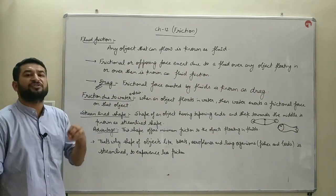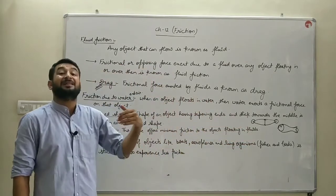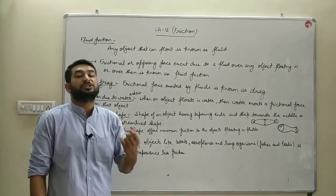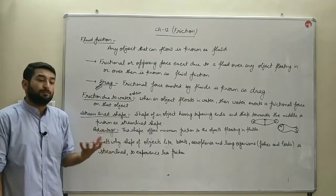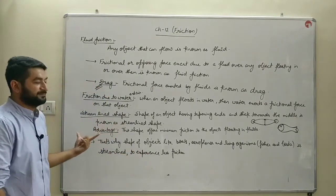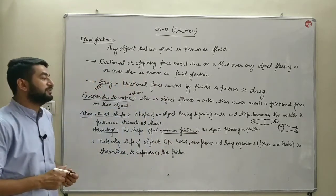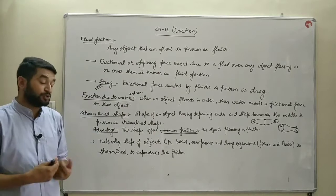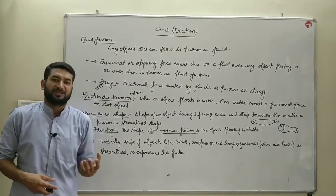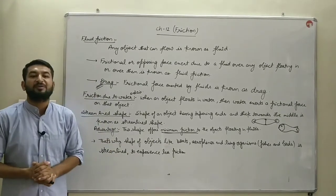Streamlined shape helps in reducing the frictional force exerted by liquid over fishes, by air over birds, by air over aeroplanes, and by water over boats and ships. To reduce that frictional force, the shape is maintained as streamlined. This shape offers minimum friction to objects moving in fluids. Living organisms like birds and fishes are naturally of streamlined shape, and non-living objects like ships, motorboats, and aeroplanes are also made in the form of a streamlined body shape.